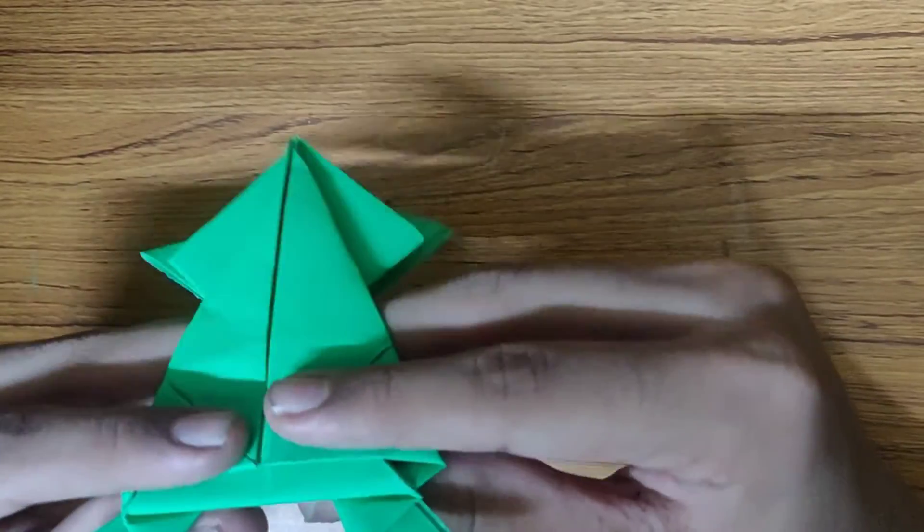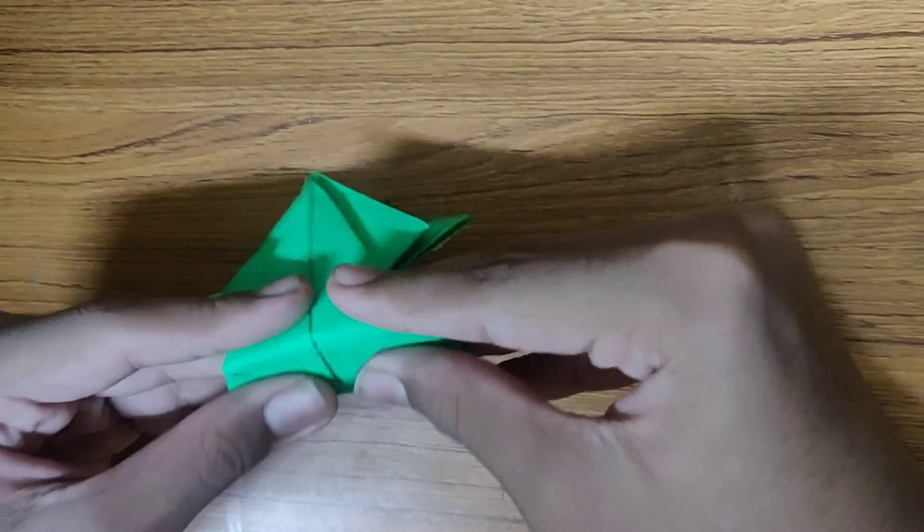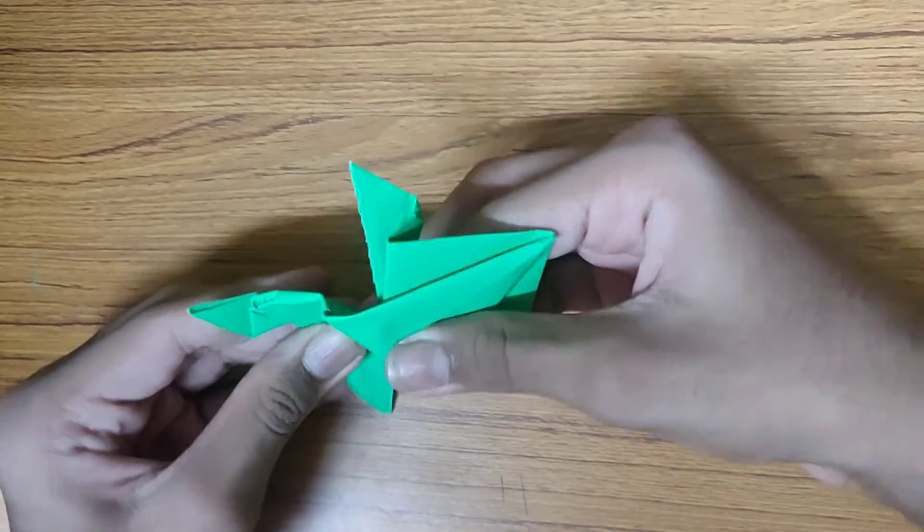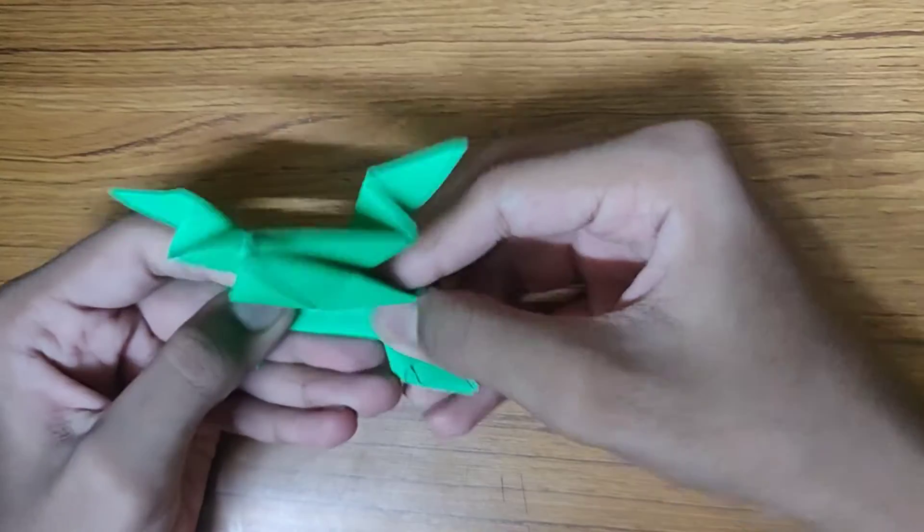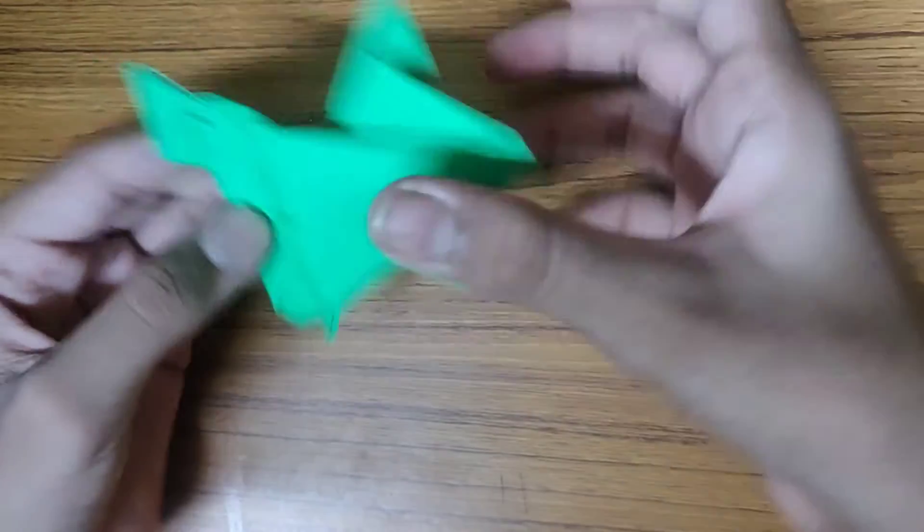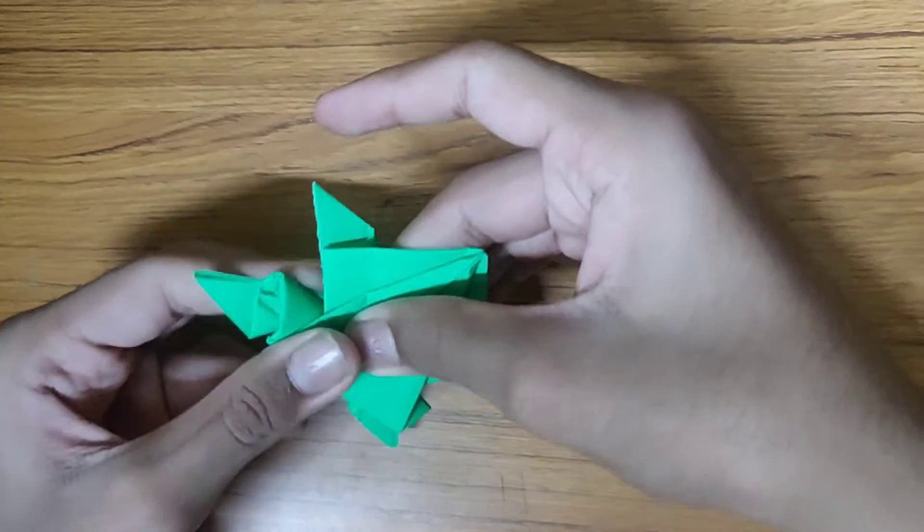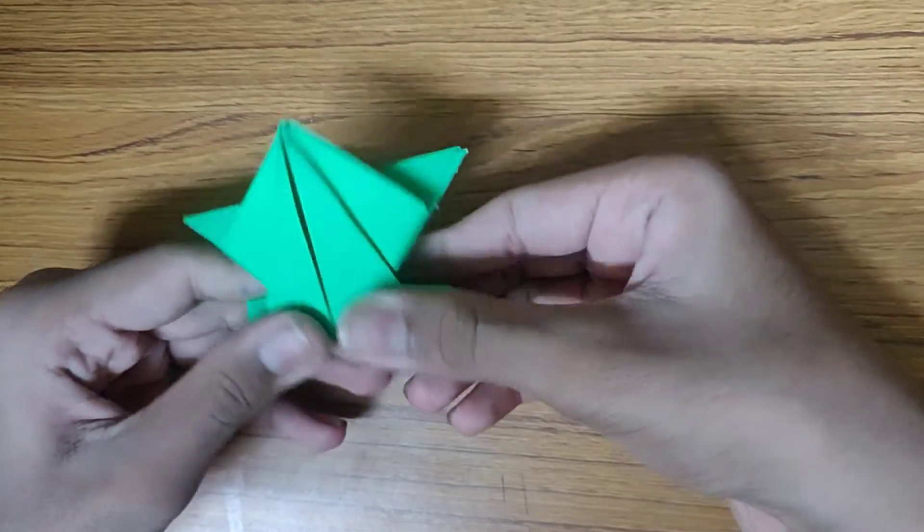Now it's time to make a valley fold. Then push the entire flap and try to bring this all the way behind, friends. Like this, crease it well.